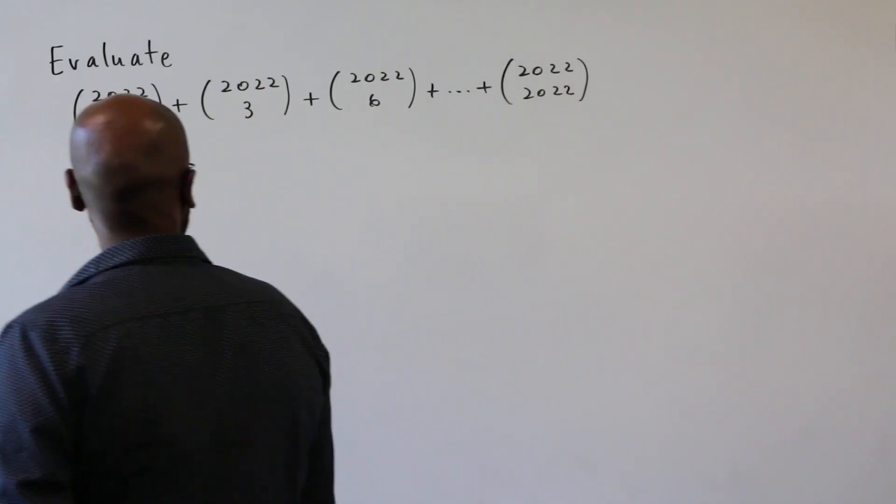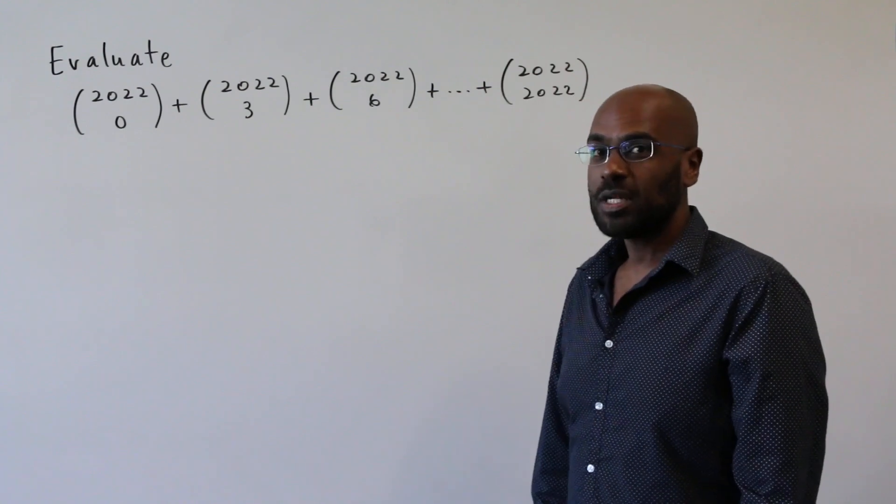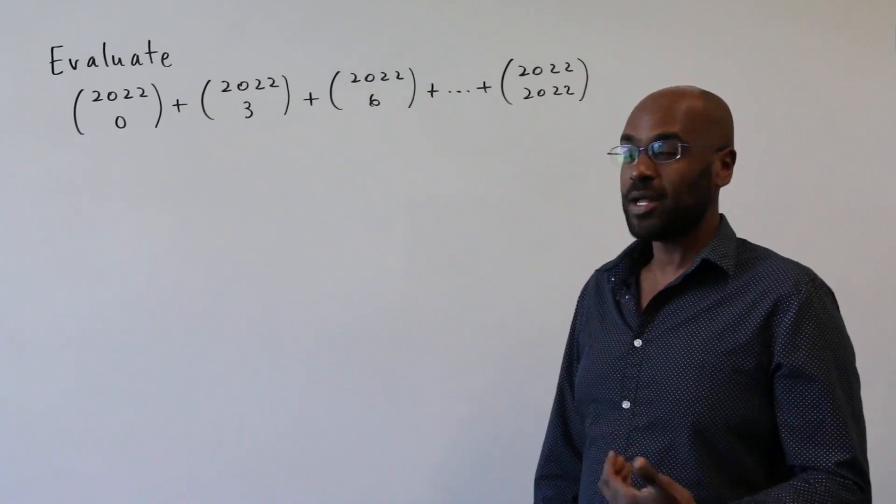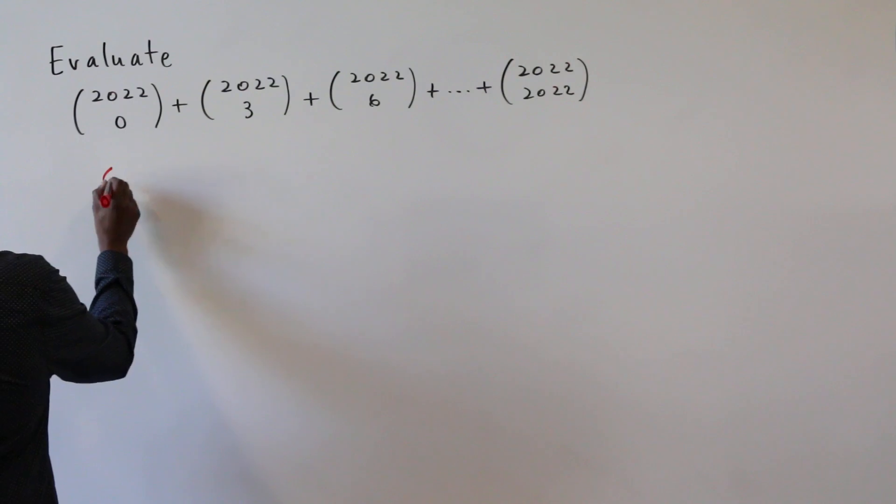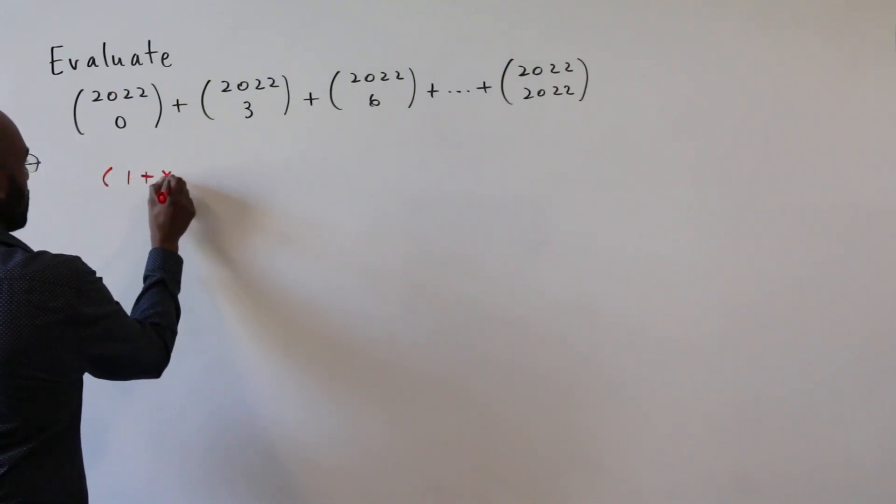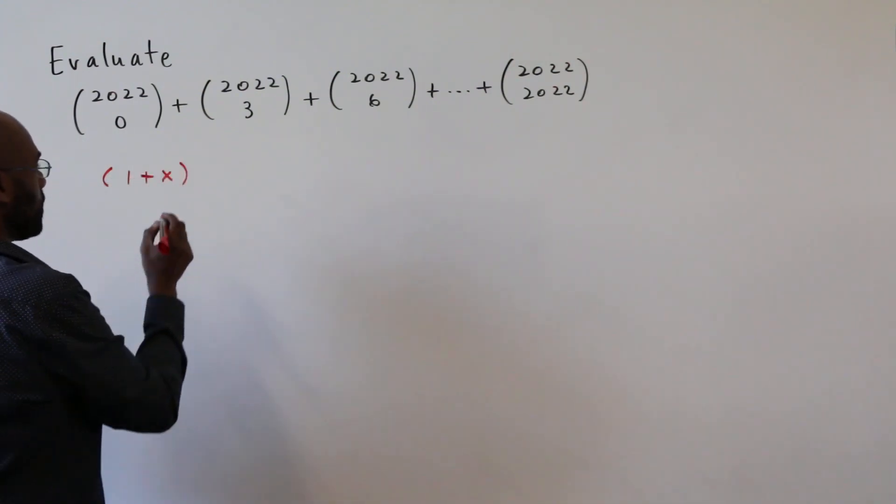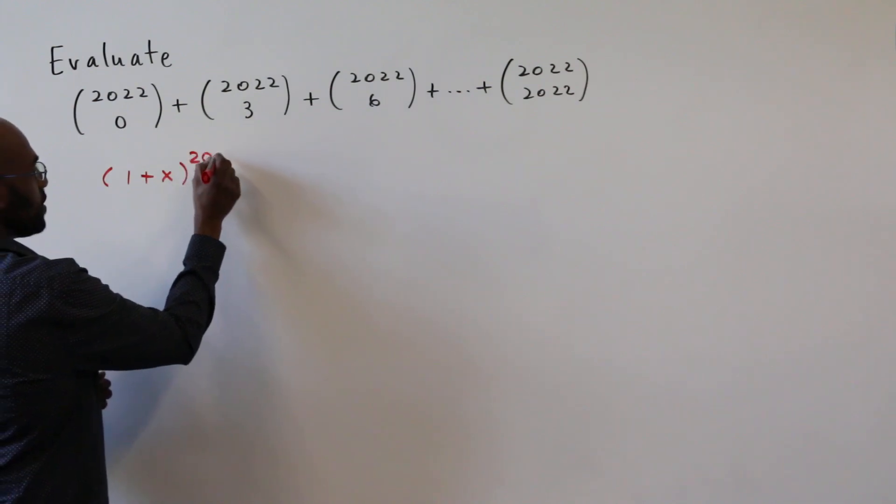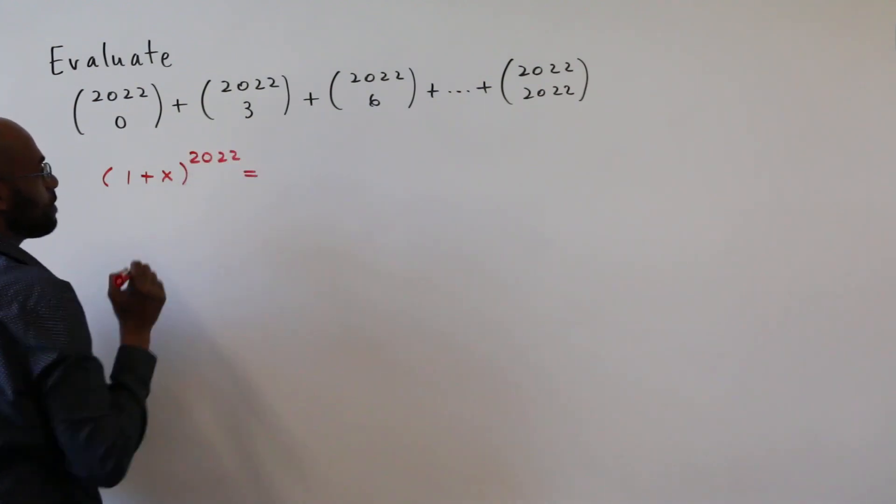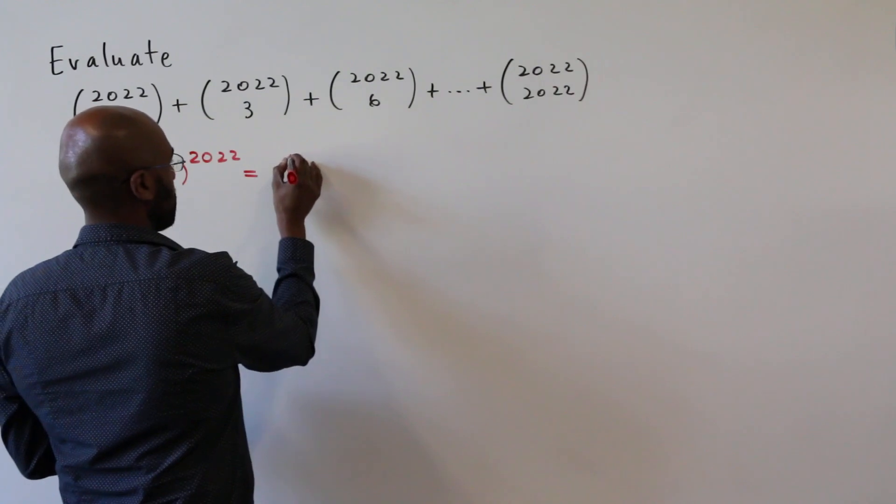So how do we go about summing something like this? We're going to use to our advantage the binomial theorem. So the binomial theorem states something like this. If we take the algebraic expression one plus x and raise it to the 2022, then we're going to get a sum that looks like this.